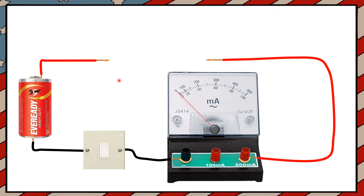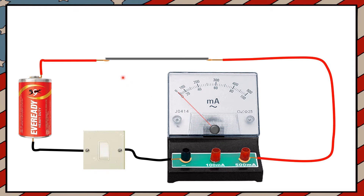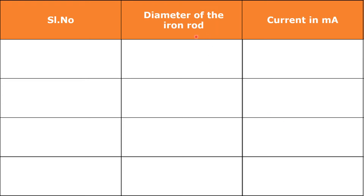First, I will place an iron rod of 1 mm diameter in this gap. Let us imagine that the diameter of this iron rod is 1 mm and it is placed in this gap. Let us turn the switch on. Some current is flowing in the circuit — it is 120 milliamperes. Let us note down these values in a table: serial number 1, diameter 1 mm, current flowing in the circuit is 120 milliamperes.